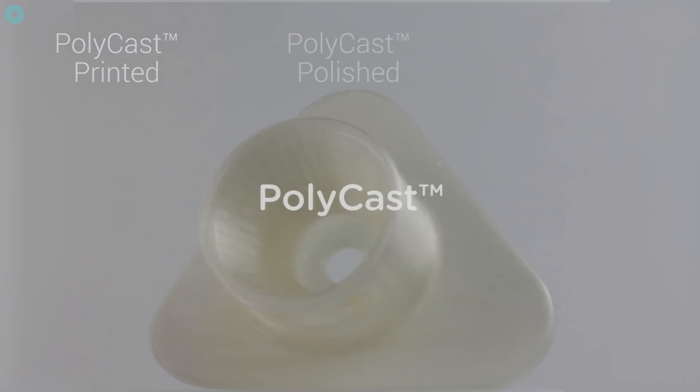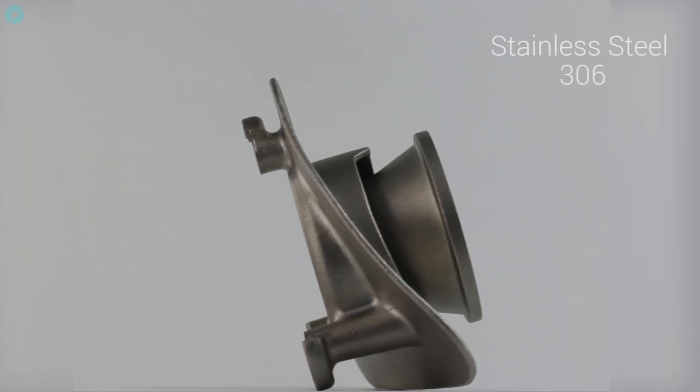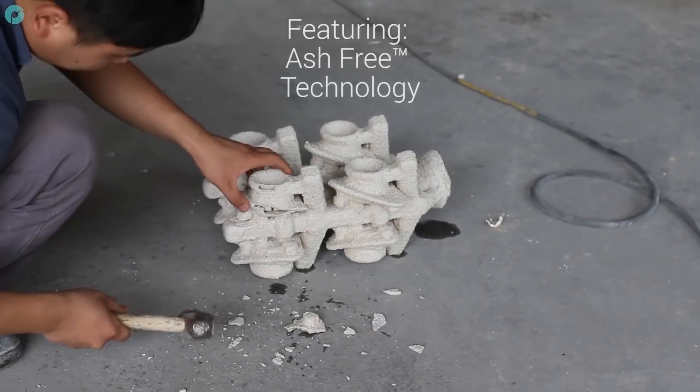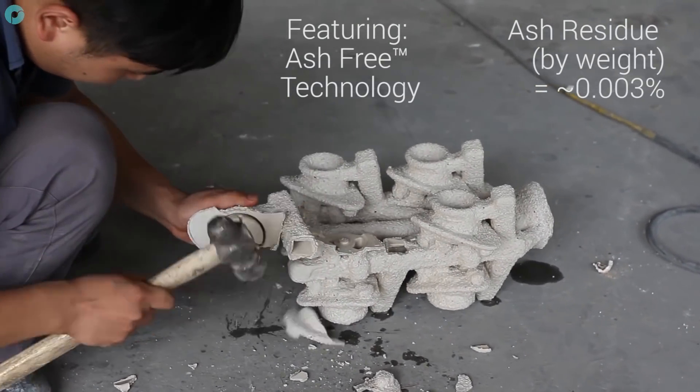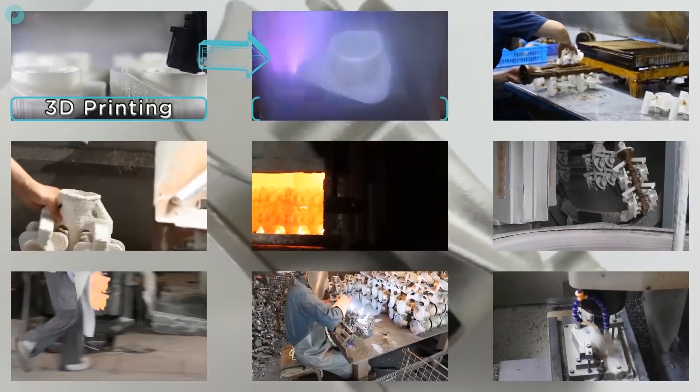Polycast is a 3D printing material designed specifically for investment metal casting. Polycast features ash-free technology which optimizes the material for a very clean burnout, typically leaving an ash residue of 0.003%. Following these 9 steps,